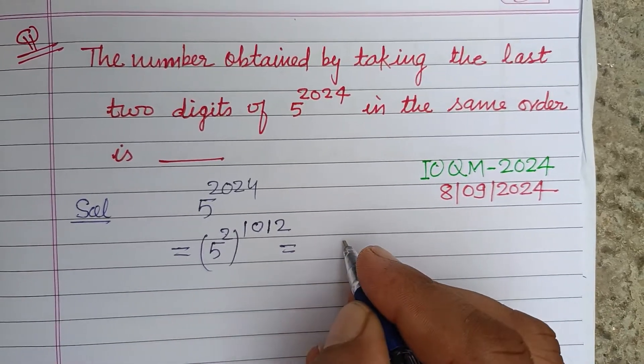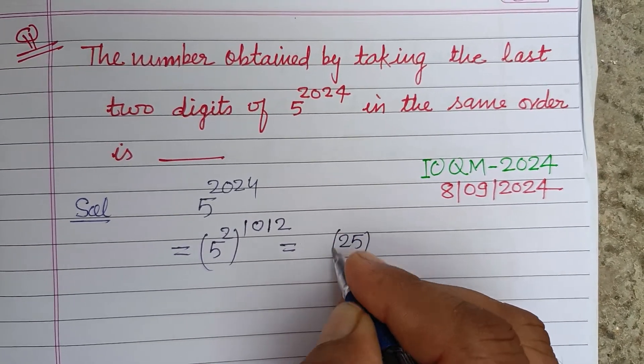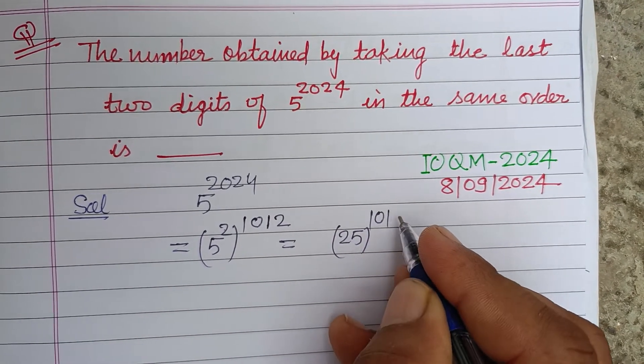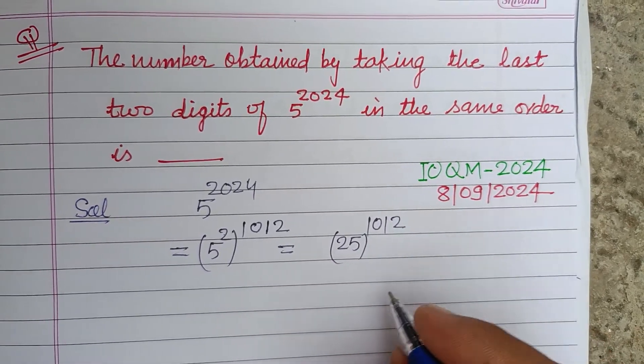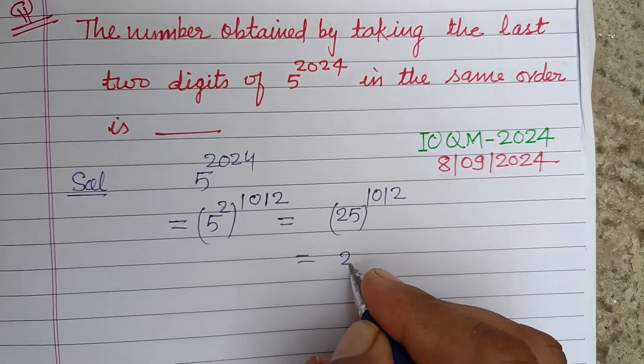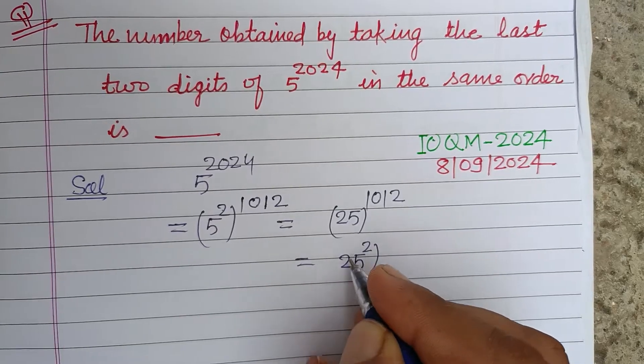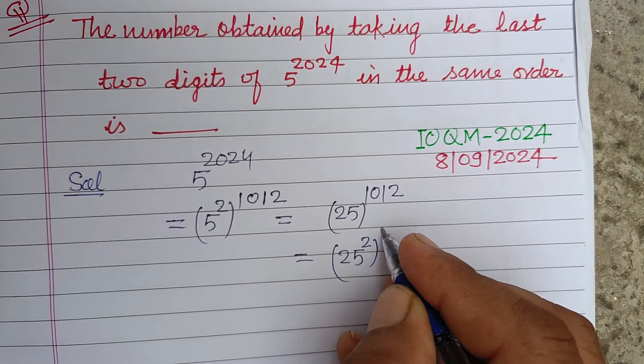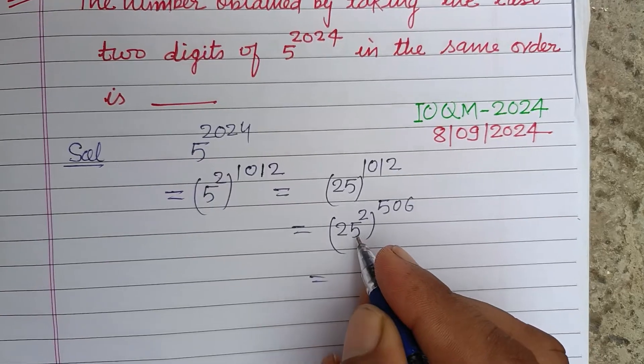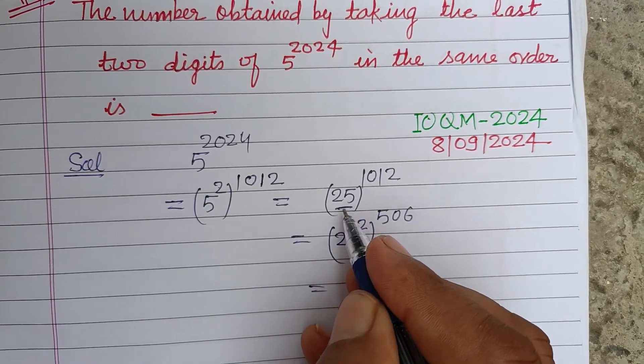5 to the power 2 is 25, so this is 25 to the power 1012. Again we write it as 25 to the power 2 to the power 506. So here it is, when we square 25, we get 625.